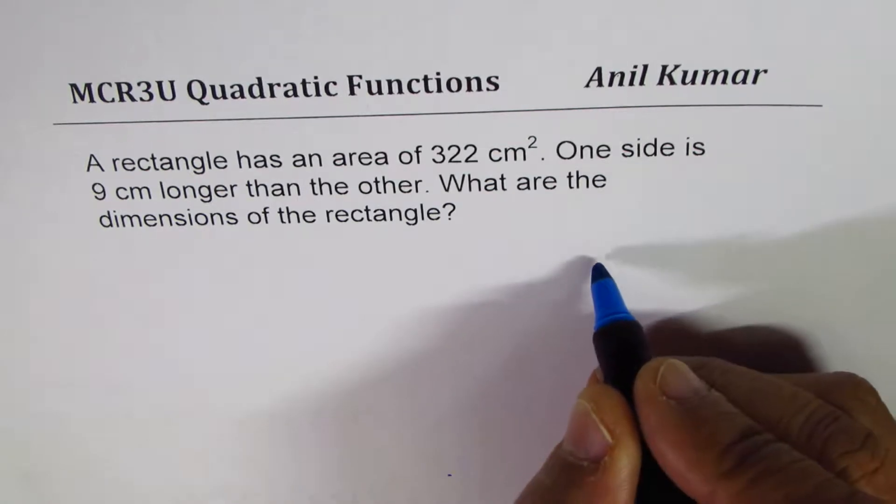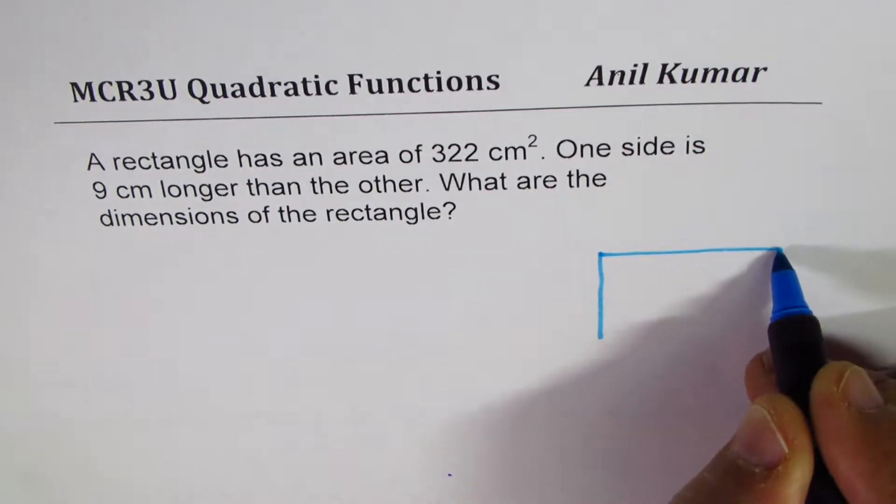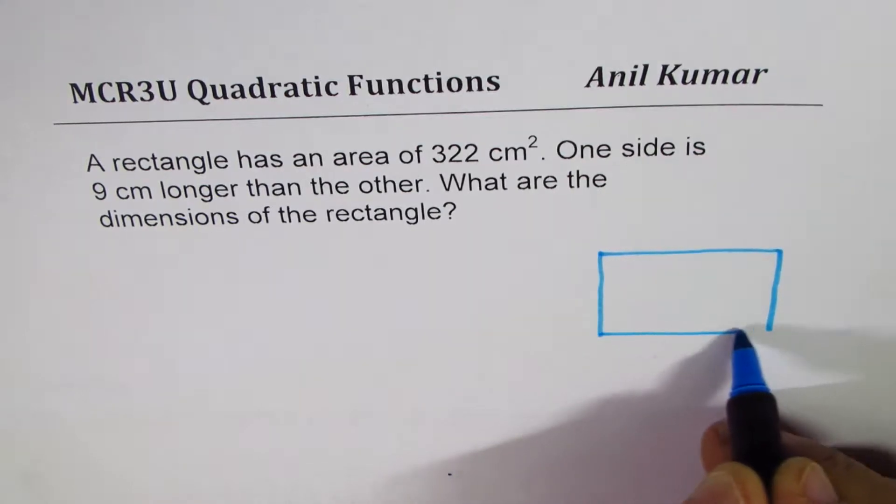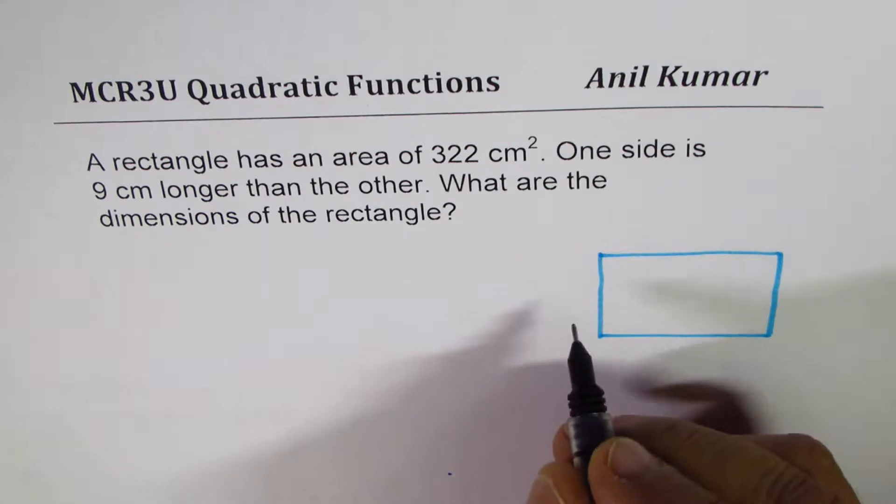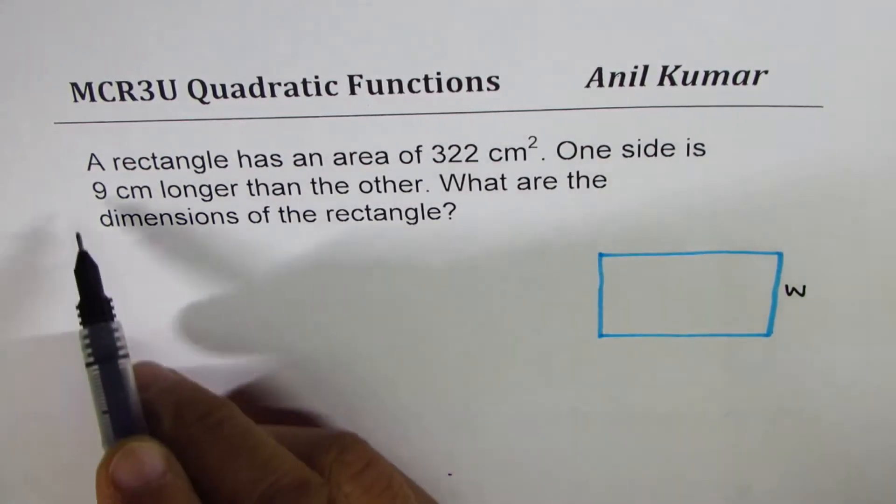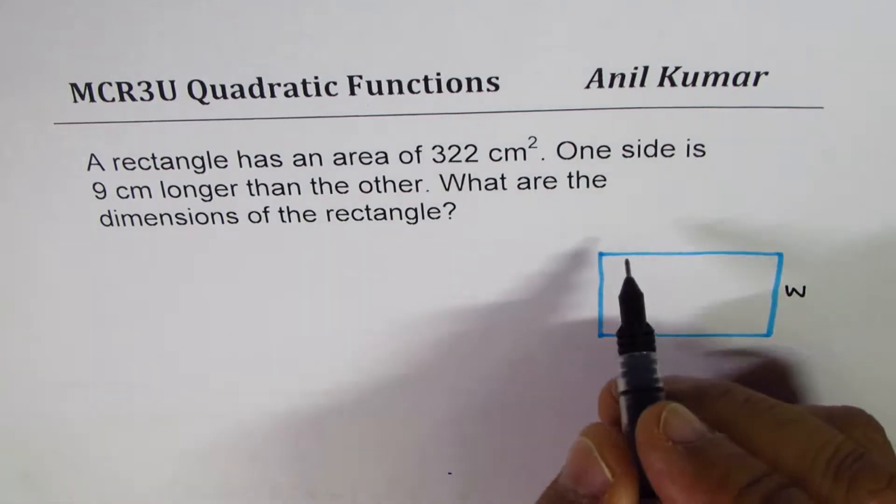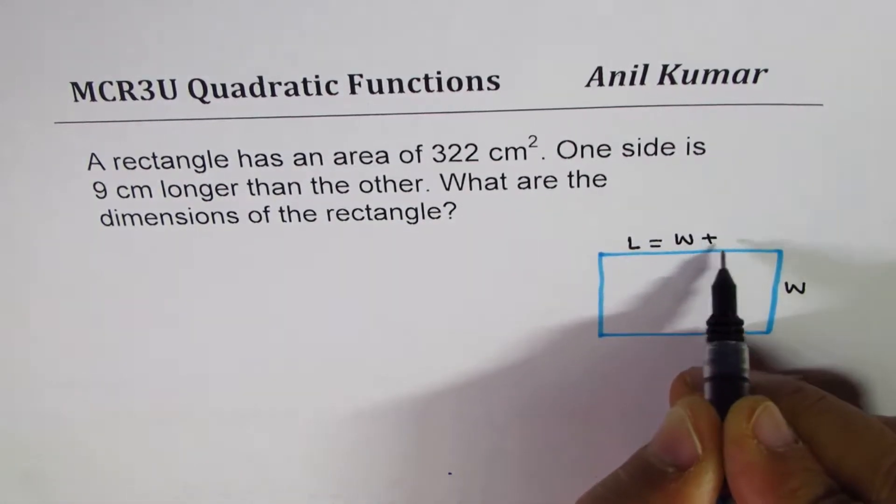Let us sketch a rectangle, define our variables, and then solve it. So let this be the rectangle with width W. Since one side is 9 centimeters longer, let length equals W plus 9.